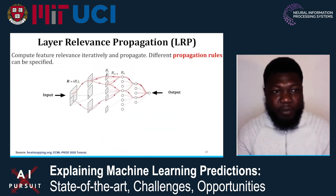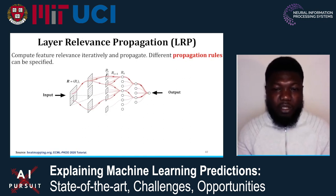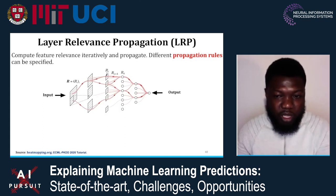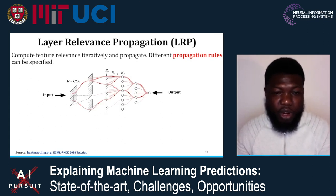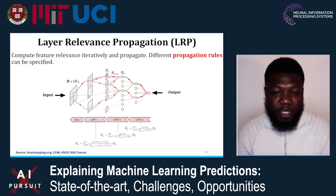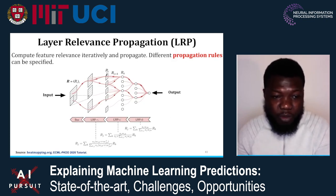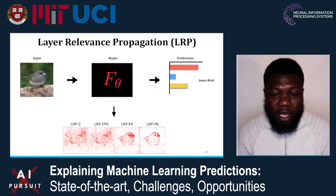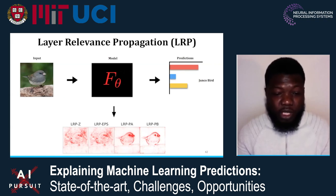Another category in the modified backprop approach is Layer-wise Relevance Propagation (LRP). This is a family of methods that decompose the output — the logit — iteratively via backpropagation all the way to the input. What distinguishes these approaches is they specify a variety of rules for how you backpropagate relevance from output to input, and each different rule gives a different saliency map. We're showing four different rules here: zero rule, epsilon rule, and two other rules as well.